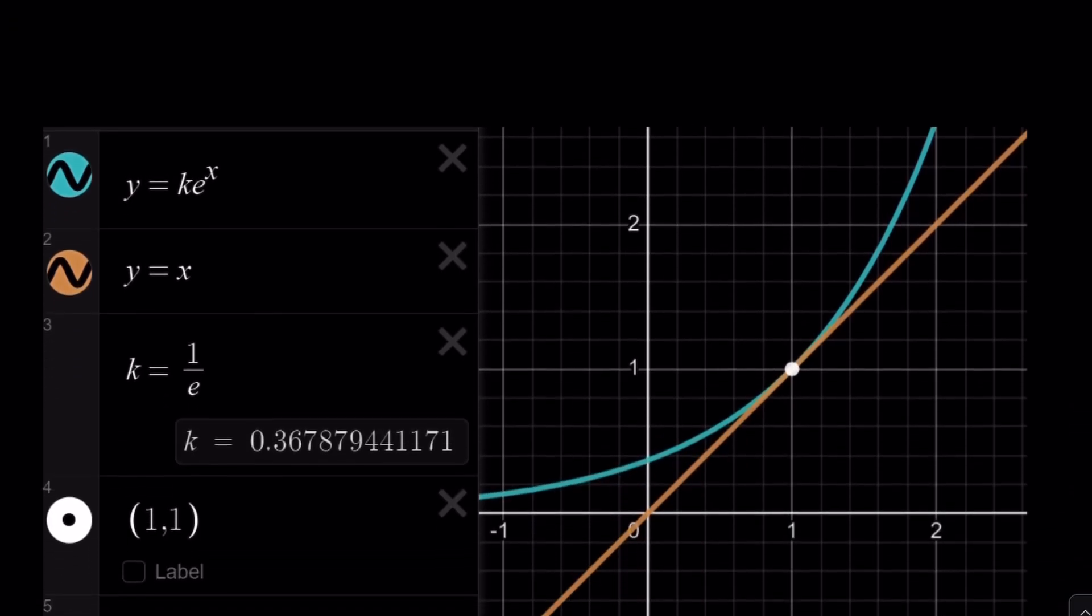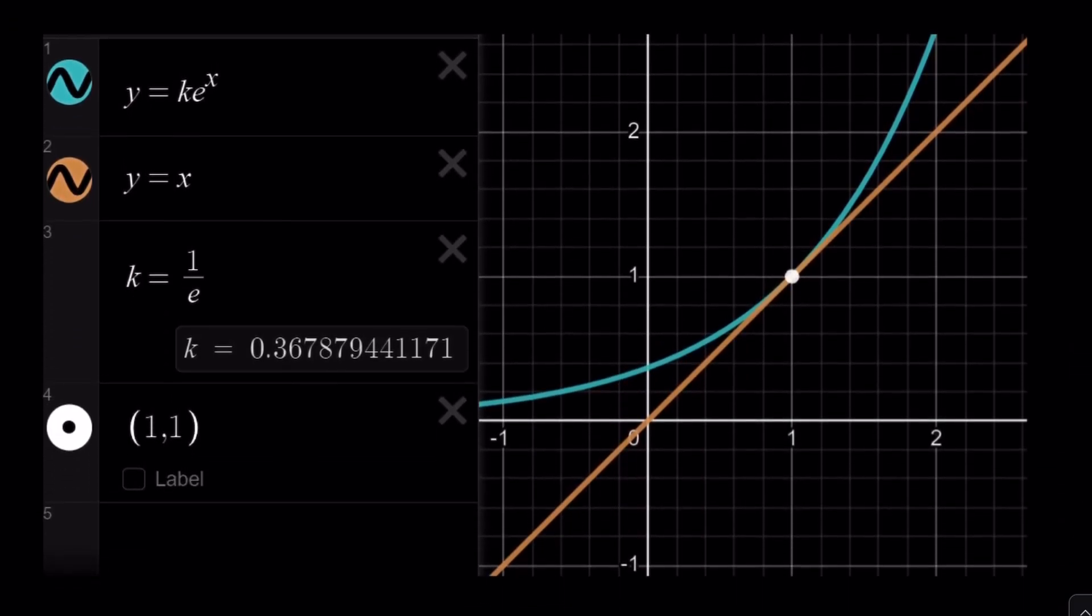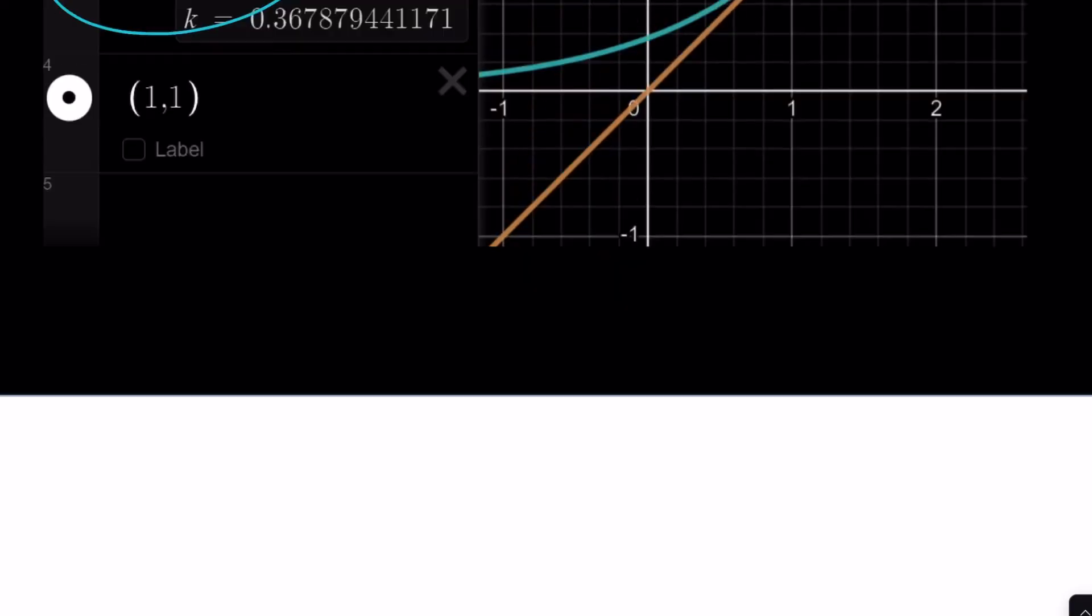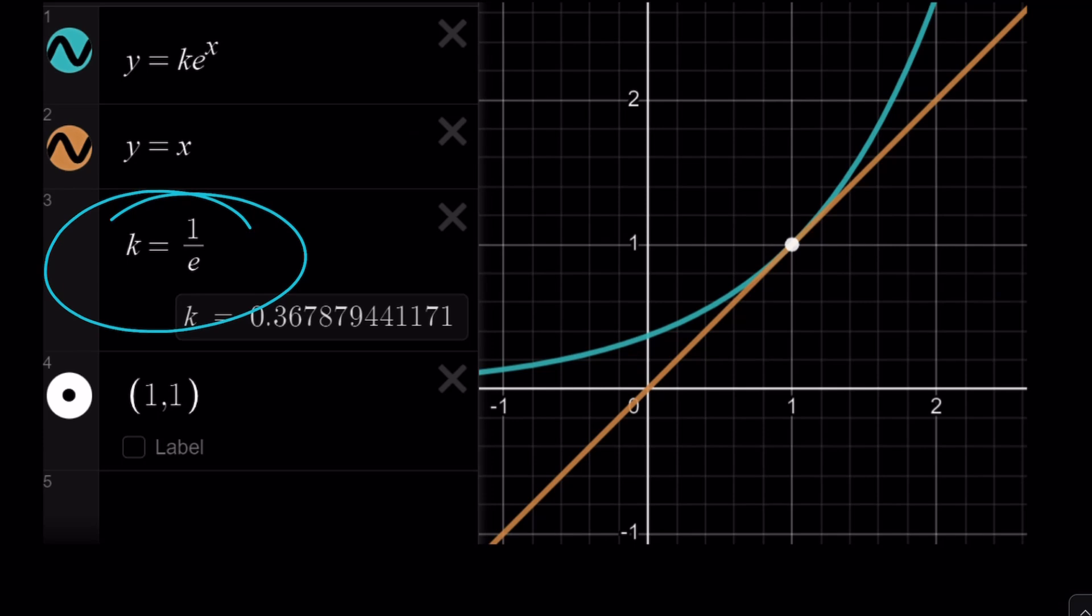And the graph basically shows you that, yes, these functions are tangent at x equals 1, but we're looking for k, and its value is 1 over e.